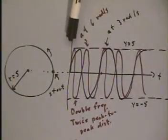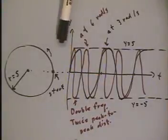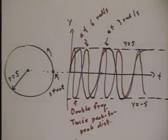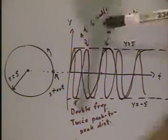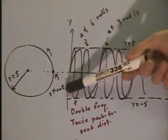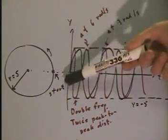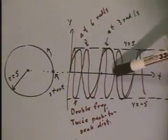Now, if somebody was to start pulling the paper across the table at a constant speed, what would happen? I'd be going up and down, but I'd also be moving to the right.